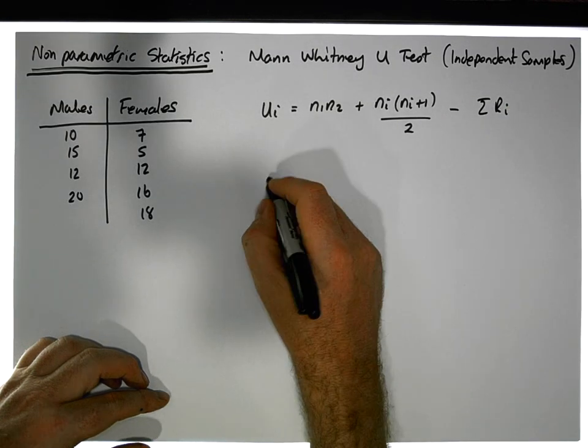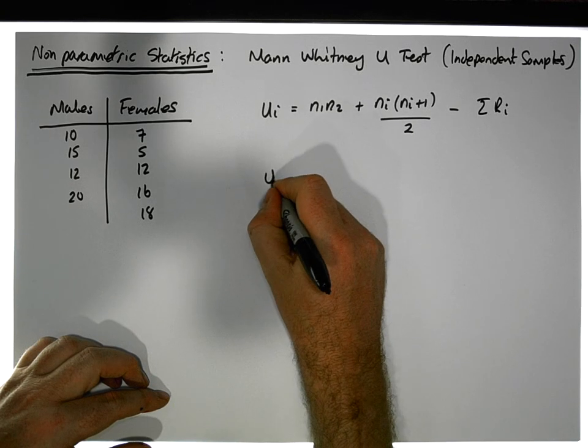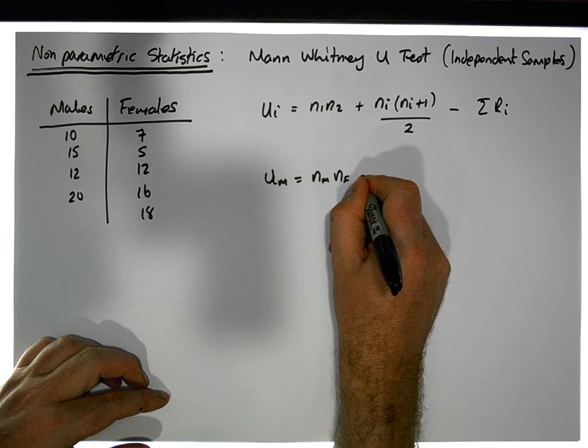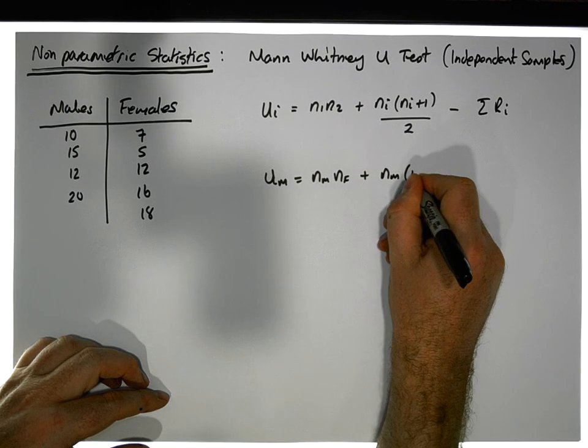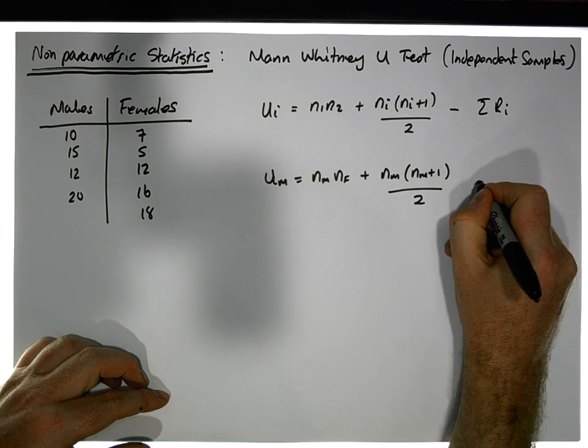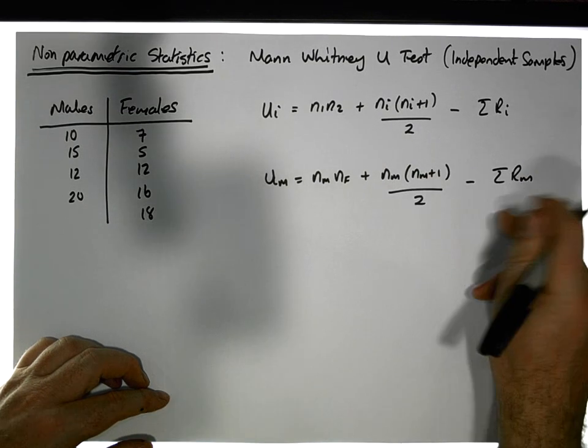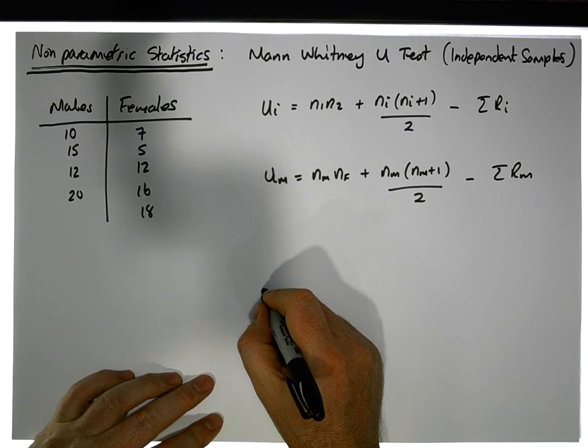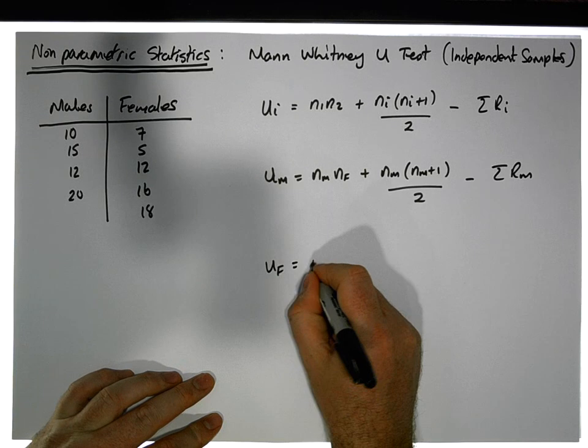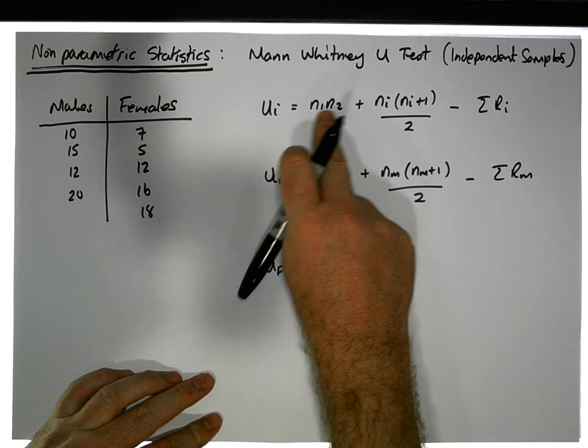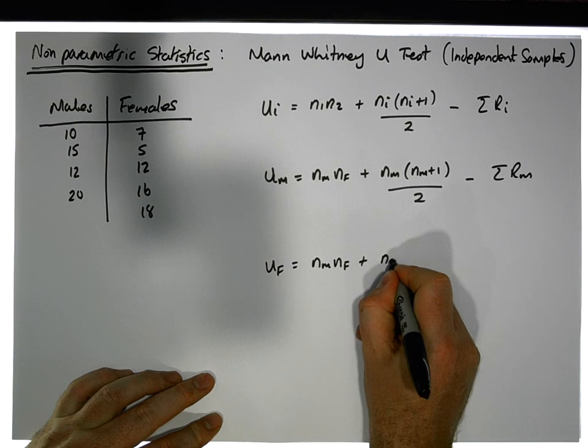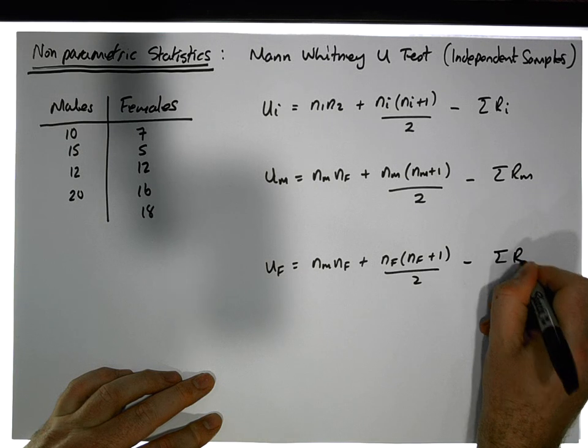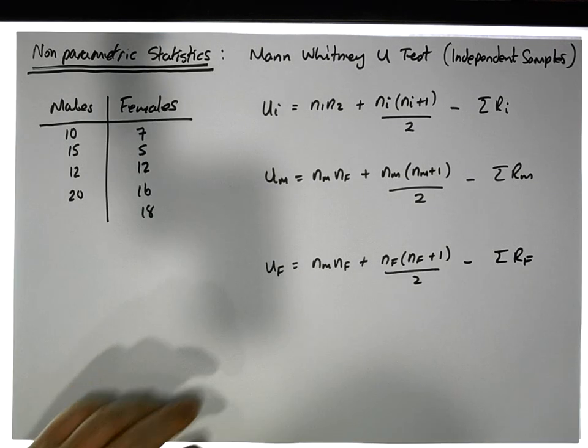So for example, in relation to the males, group one, we have group Um, it's going to be equal to the sample size for the males times the sample size for the females, plus the sample size of the males times the sample size of the males plus one, divided by two, minus the sum of the ranks for the males, which we haven't actually calculated just yet. And then for the females, we're going to have Uf, the sample size of the males times the sample size of the females, it's n1 times n2, so that's going to be the same, plus the sample size of the females times the sample size of the females plus one, divided by two, minus the sum of the rankings that we've associated with the female group.